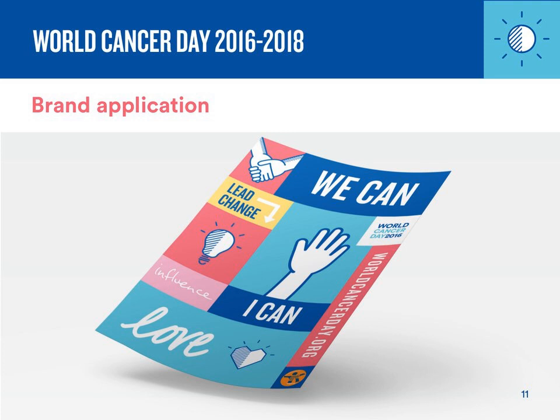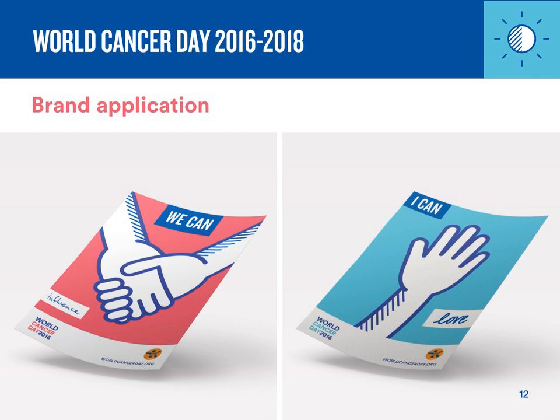The main campaign poster, which you can see on the screen, has been created in a way that it can be used as it is, co-branded, adapted, edited, and developed further depending on your needs. Two individual campaign posters have also been designed — one related to the "We Can" and one to the "I Can" parts of the campaign. The posters are already available in English and we're expecting the French and Spanish ones as well as additional translations very soon.